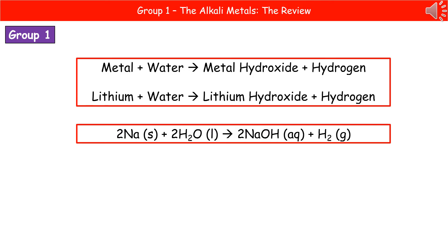For the balanced symbol equation — you do get a periodic table in the exam to look up symbols. Using sodium as the example: Na plus H₂O makes NaOH plus H₂. Don't forget the subscript 2 for hydrogen, otherwise your balancing will go wrong. To balance it, put a 2 in front of sodium, water, and sodium hydroxide. Good news for those who struggle with balancing: you can just learn this pattern — 2 in front of everything except hydrogen for any alkali metal. Always the same: 2 in front of your metal, 2 in front of water, 2 in front of the metal hydroxide, and then just H₂ for hydrogen.